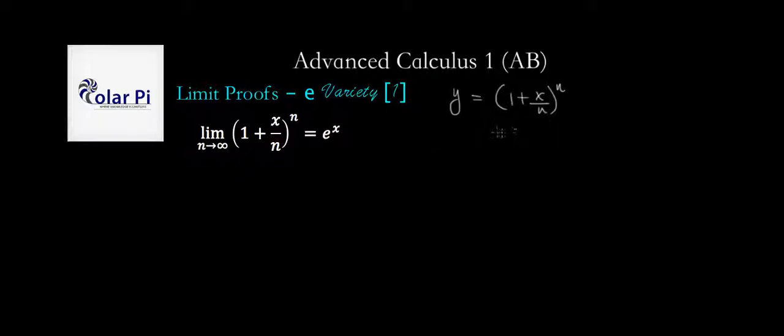Okay, then taking the natural log of both sides of this, so y is like this here, right? Taking the natural log of both sides of this, we can write the natural log of y is equal to the natural log of 1 plus x over n to the power n, right? But instead of writing an n there, the log rules allow us to write the n right there.